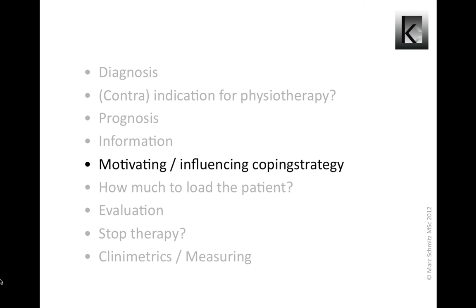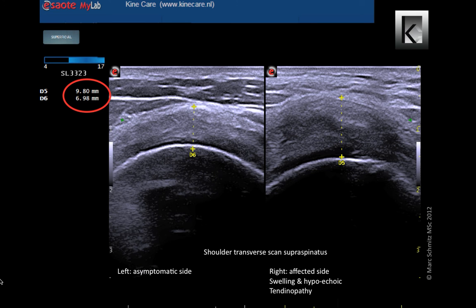People with for example a tendinopathy often have a too-active coping strategy. It's important to change this into adequate coping behavior. This is a 42-year-old carpenter with a too-active coping strategy. The right side shows a big intratendinous swelling due to the inflammation process, with a subacromial impingement as a result. Confronting the patient with the left-right comparison and informing that this could lead to more work-influencing damage resulted in taking the complaint seriously.